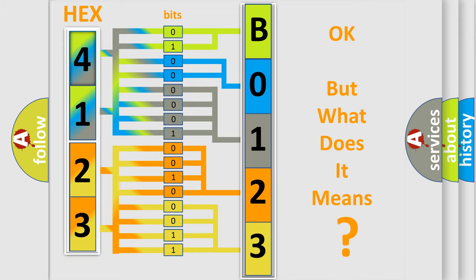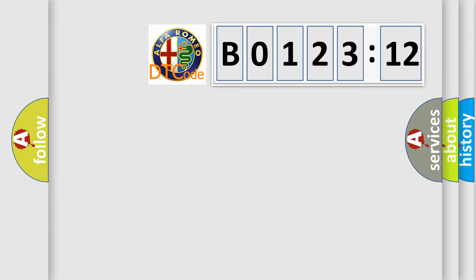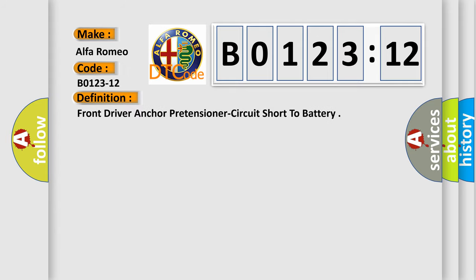The number itself does not make sense to us if we cannot assign information about it to what it actually expresses. So, what does the diagnostic trouble code B0123-12 interpret specifically for Alfa Romeo? The basic definition is: Front driver anchor pretensioner circuit short to battery.